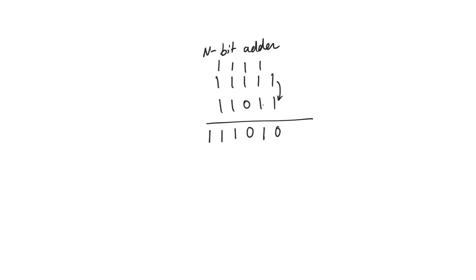Obviously, the general case is that for n-bit inputs, we have n plus 1 bits in the output. Some of the inputs might not need n plus 1 bits to store at the output, but we have to account for large input operands needing more space at the output.